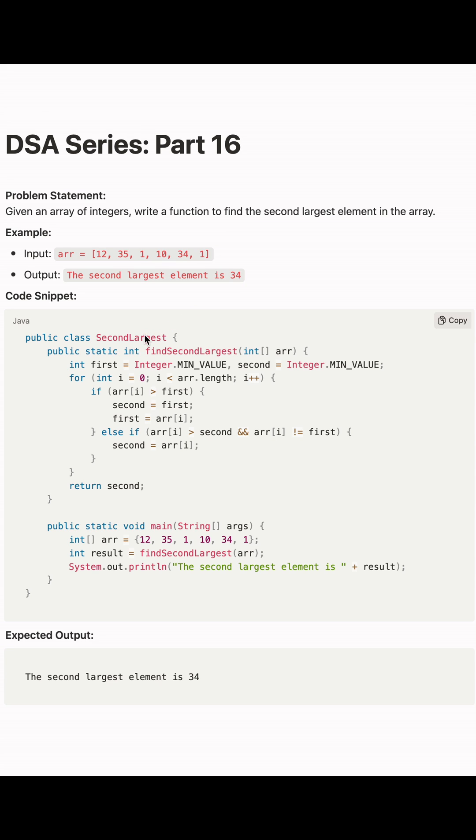Let's see the code. Here we have a class SecondLargest in which we define a static method findSecondLargest. It's taking an integer array. First, we define two variables, first and second, which we initialize to the minimal values.